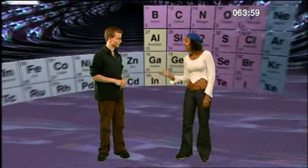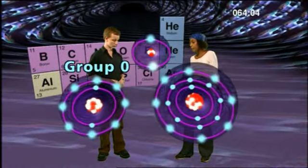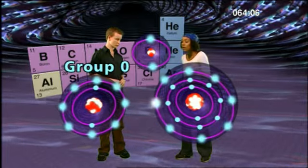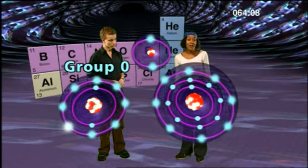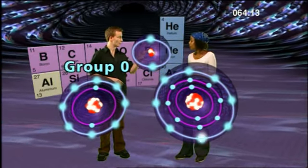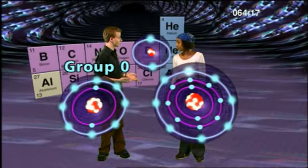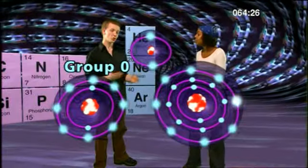But what about group zero? They can't have zero electrons, can they? Let's take a look at some of the atoms in group zero. All the atoms in this group have an outer shell which is completely filled up with electrons. Helium has two electrons in its outer shell, and neon and argon both have eight electrons in their outer shells. Because they have completely filled outer shells, they do not react with any other chemicals, which is why they're called group zero.